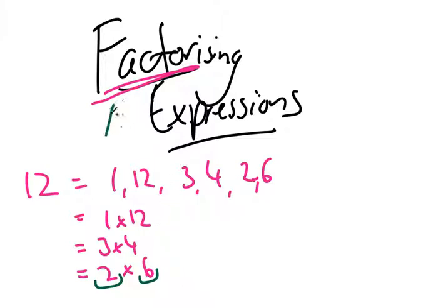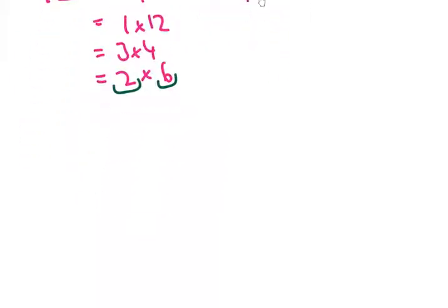When we're talking about factorizing, generally all we're doing is expressing things, expressing expressions technically, in terms of their factors. So we're going to try and find common factors, and then we're going to write them out as multiply.